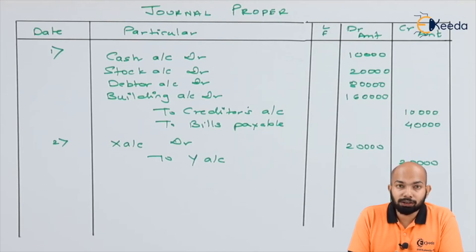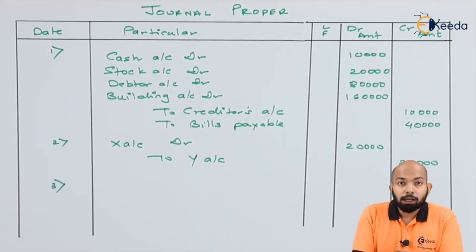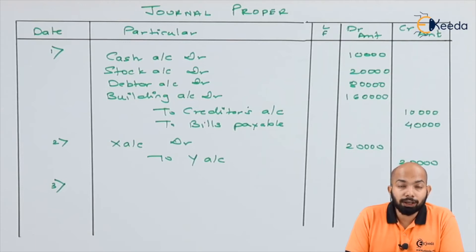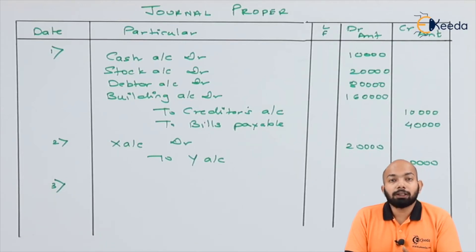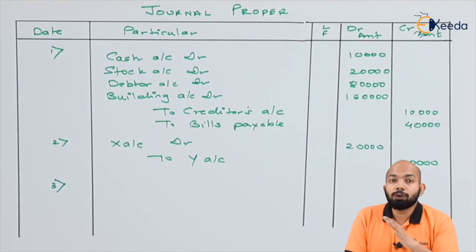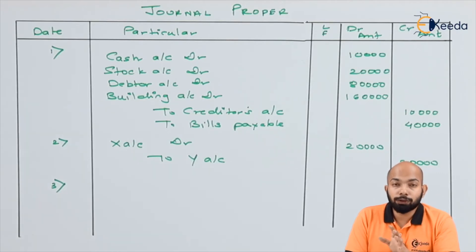The third transaction refers to rupees 400 expenses which were ideally supposed to be debited to repairs to furniture account, but were instead debited to furniture account. Now that furniture account has been debited incorrectly, to reverse it you credit furniture account, and the correct account — repairs to furniture — has to be debited.